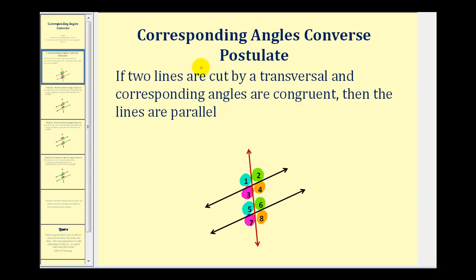The corresponding angles converse postulate tells us that if two lines are cut by a transversal and the corresponding angles are congruent, then the lines are parallel.